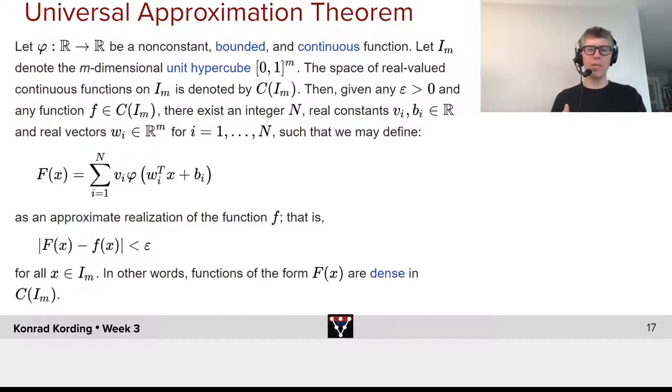As an approximate realization of the function f, that is, F(x) minus little f(x), so that this is smaller than epsilon for all x out of the cube. In other words, functions of the form F(x) are dense in C(I_m).